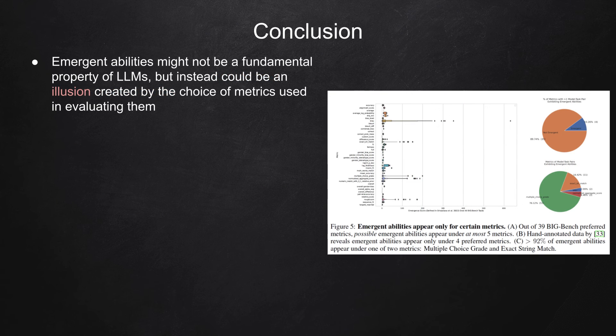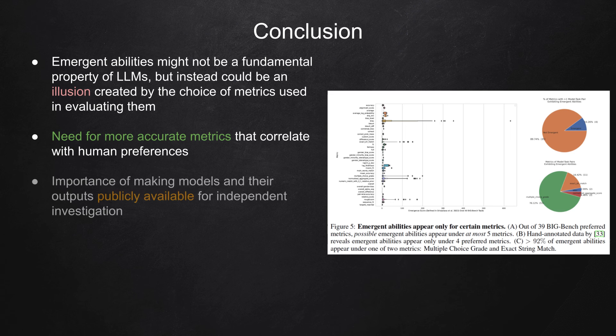This has important implications for AI research, including the need for more accurate metrics that correlate with human preferences and the importance of making models and their outputs publicly available for independent investigation.